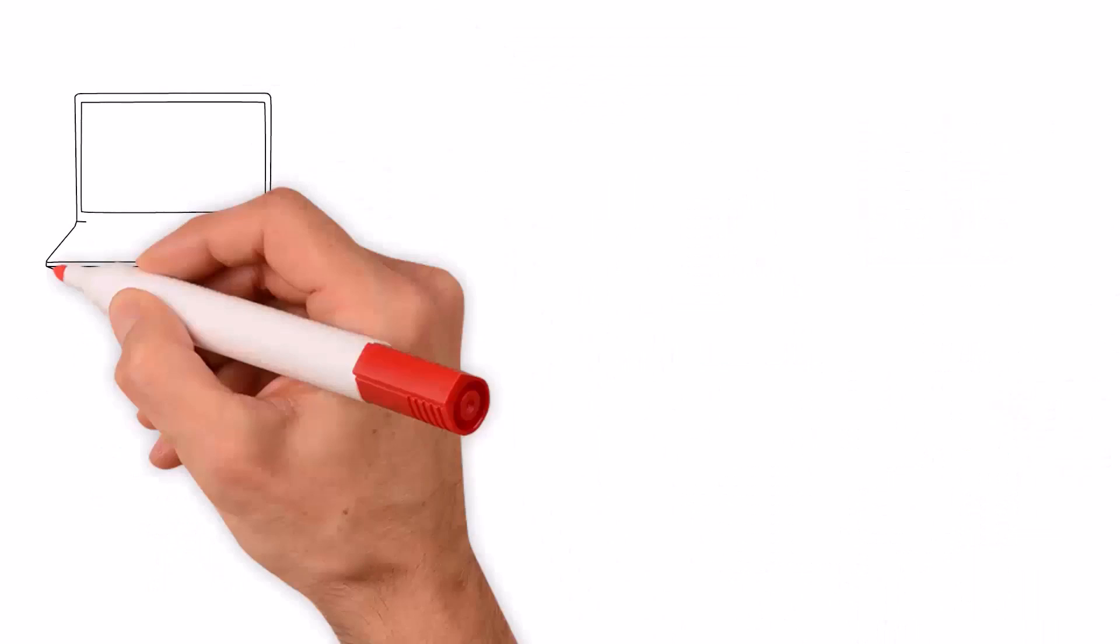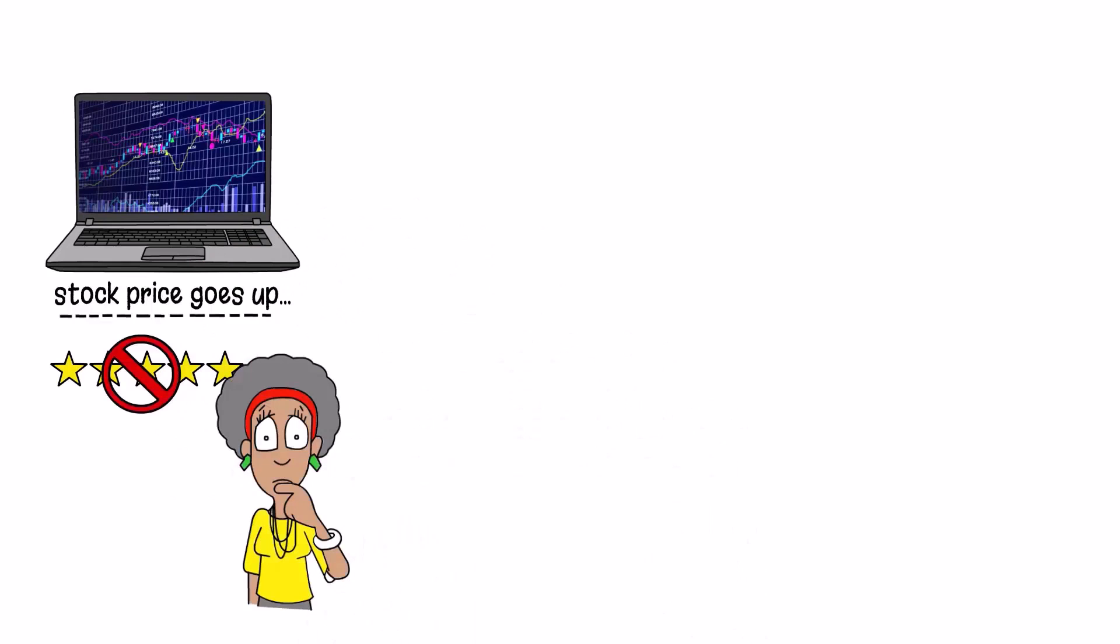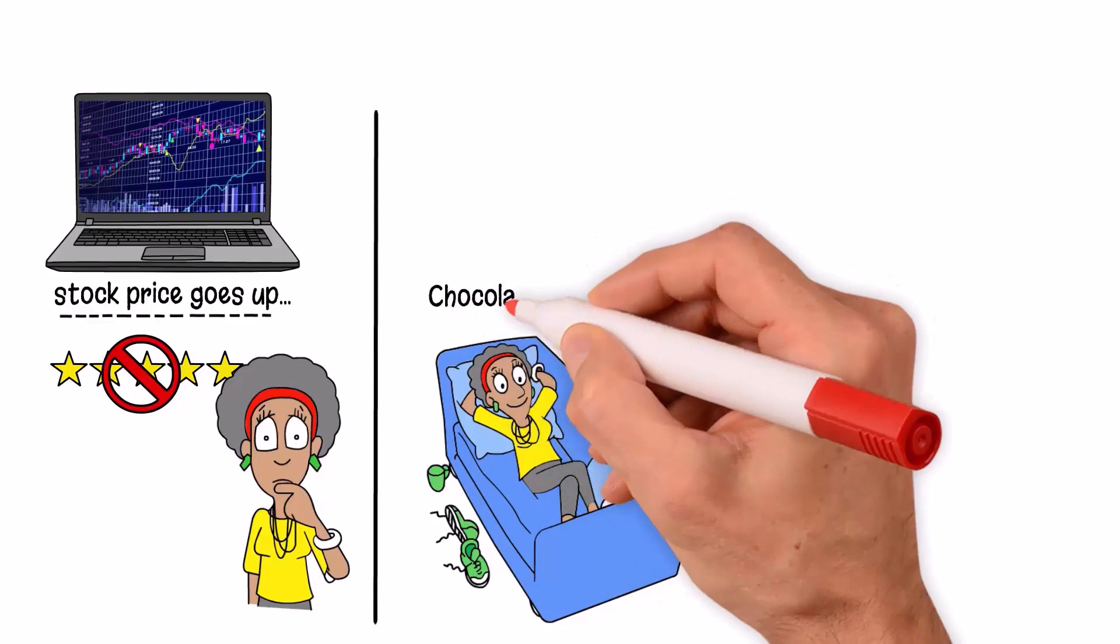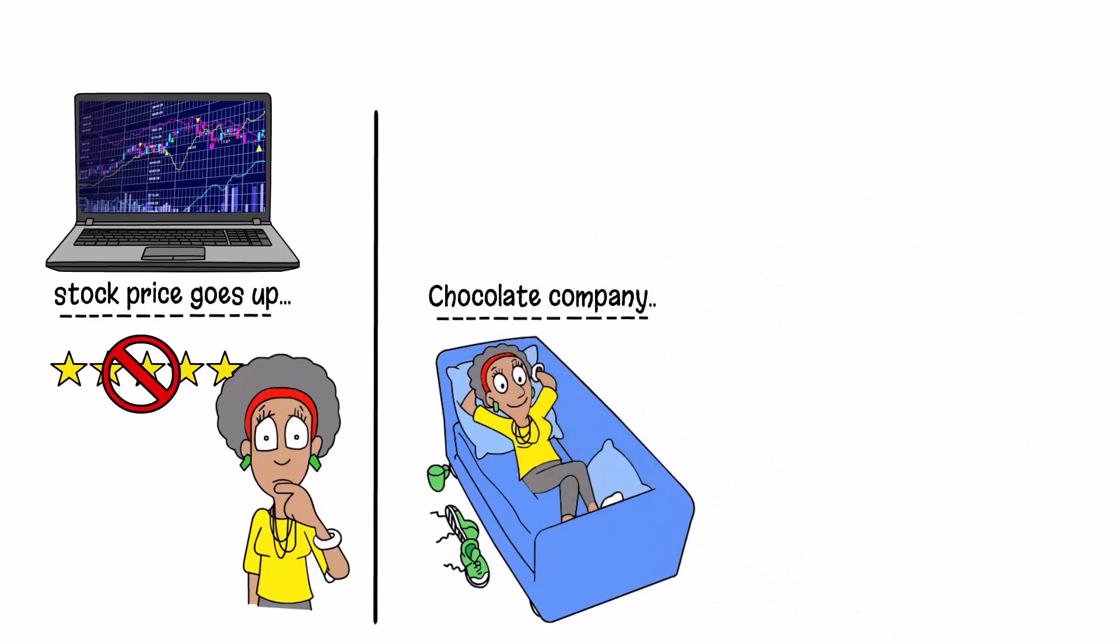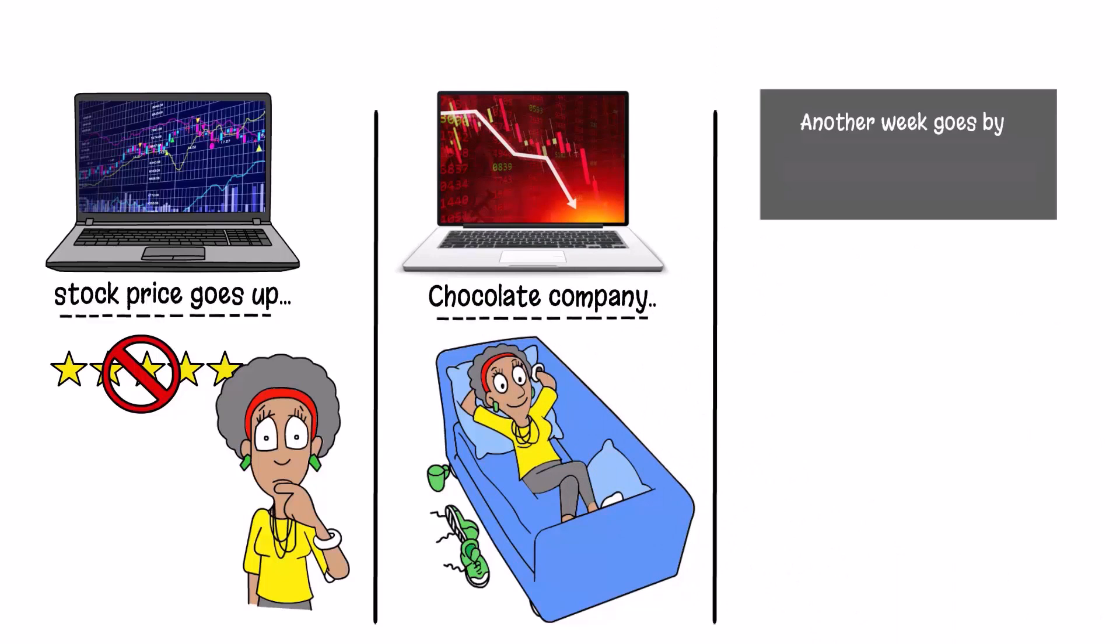Now one week goes by and indeed the stock price does go up. You still don't give it much credibility since everyone can get lucky. However, the next day the same brokerage company sends you a second stock pick about a chocolate company's stock price that would go down. Another week goes by and the stock of the chocolate company did indeed go down.